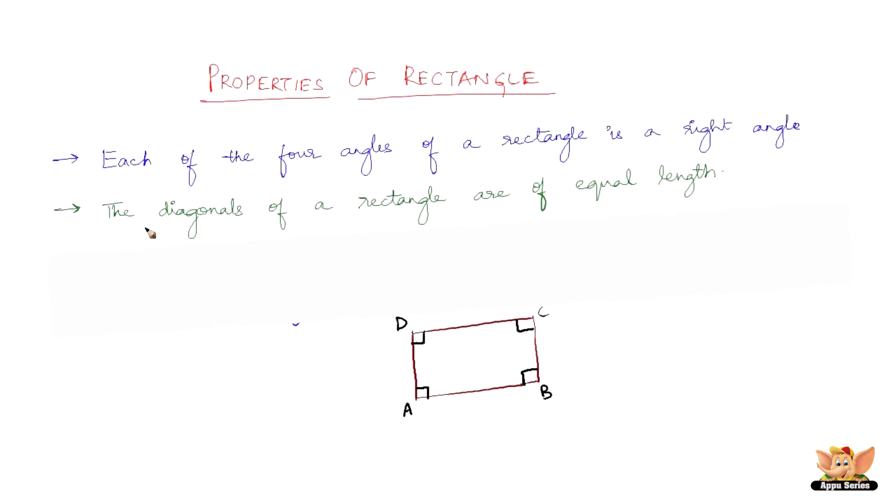The second property states that the diagonals of a rectangle are of equal length. A diagonal is nothing but joining the two corners of a quadrilateral. If the length of diagonal AC is 5 units, then the length of diagonal BD is also 5 units. That's exactly what the second property says.